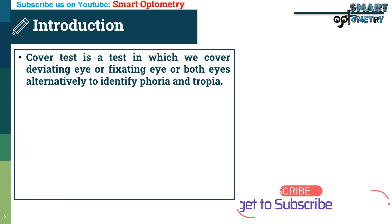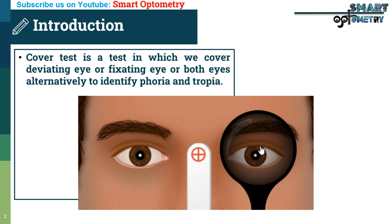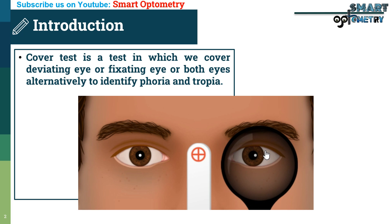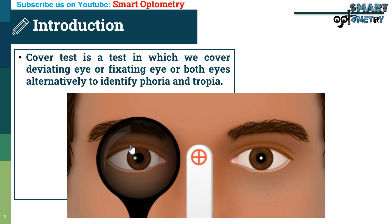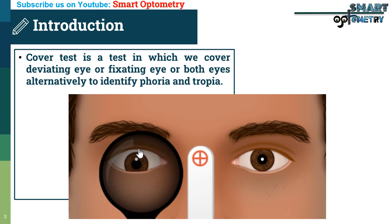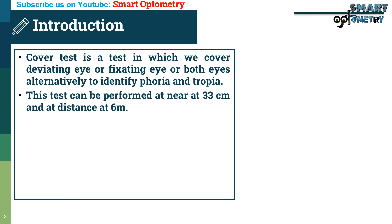With the cover test we can identify phoria — whether it is exophoria, esophoria, hyperphoria, or hypophoria — and tropia — whether it is esotropia, exotropia, hypertropia, or hypotropia.